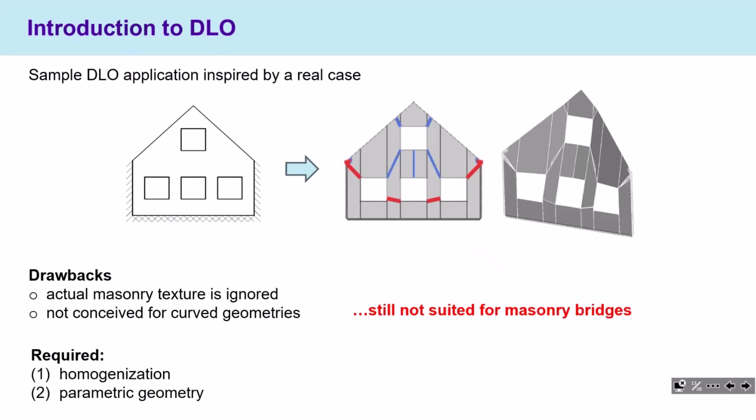In the context of DLO applied to masonry arch bridges, there are some drawbacks. First, the actual masonry texture is not considered. Second, this method is applied only to planar geometries. In order to move to masonry arch bridges, we need first to include homogenization to account for the real masonry texture, and second to introduce parametric geometry in order to handle curved shapes.